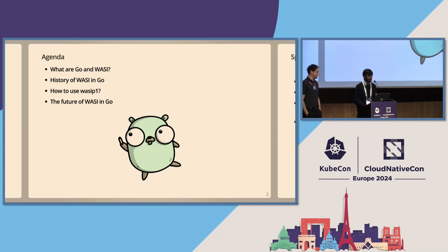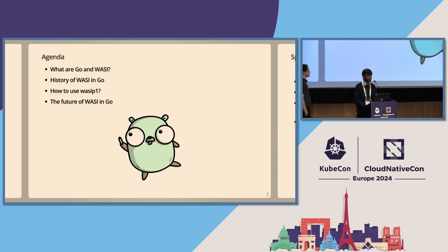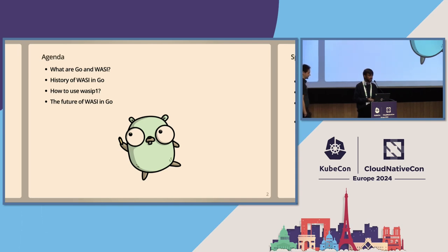Let me tell you about the agenda, what we want to talk about. We'll delve into WASI and discuss a bit about its history and how it was added to Golang in the 1.21 release. Then we'll start with WebAssembly architecture and the WebAssembly system interface. We'll do a deep dive into WASI, how it works and all.